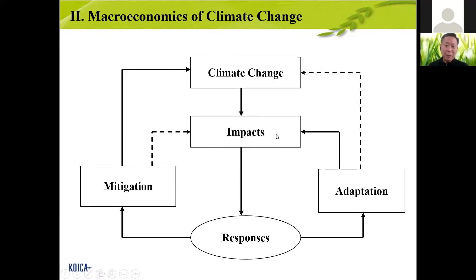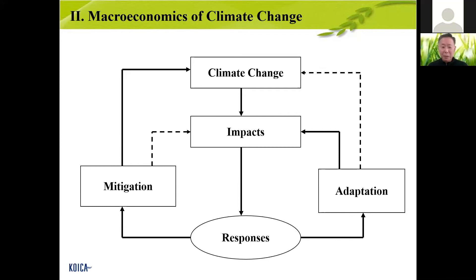This is what we use in introductory microeconomics classes. Climate change has some impacts and there must be some responses. What kind of responses? There is mitigation and adaptation. We will learn a little about what is mitigation, what is adaptation — and how they mitigate climate change impacts through a cycle of climate change impact, response, mitigation, and adaptation.